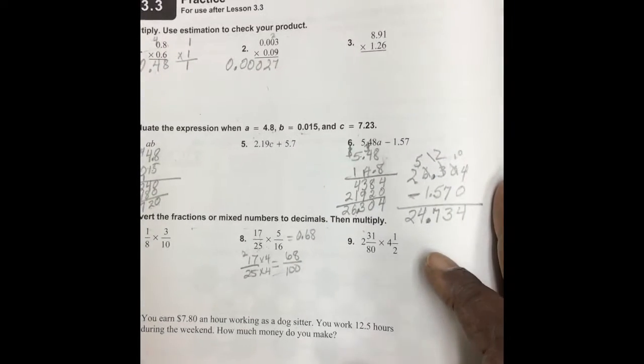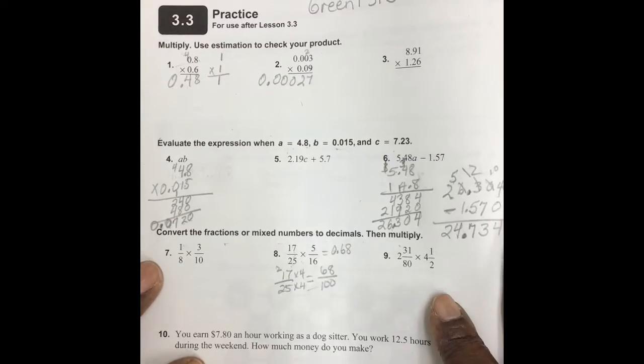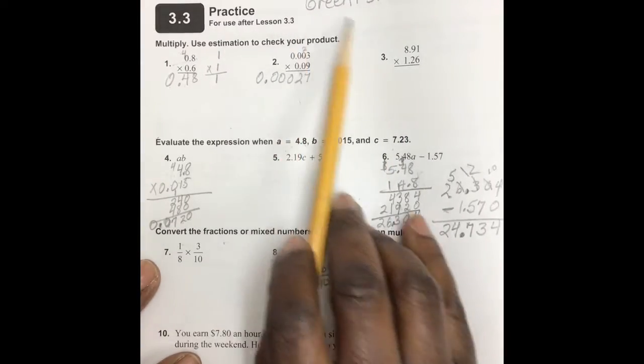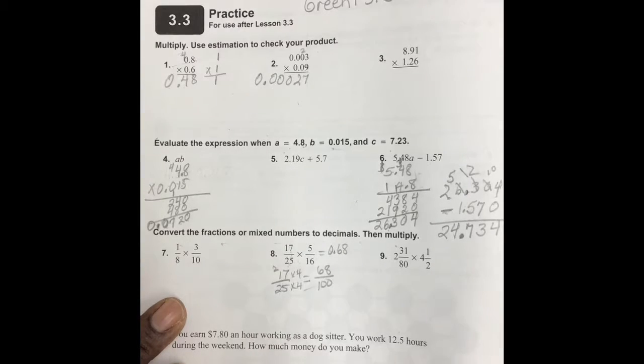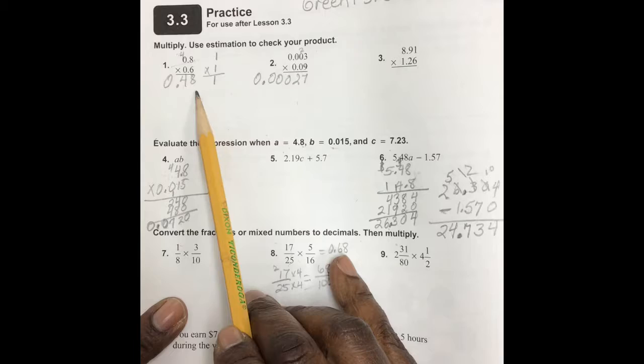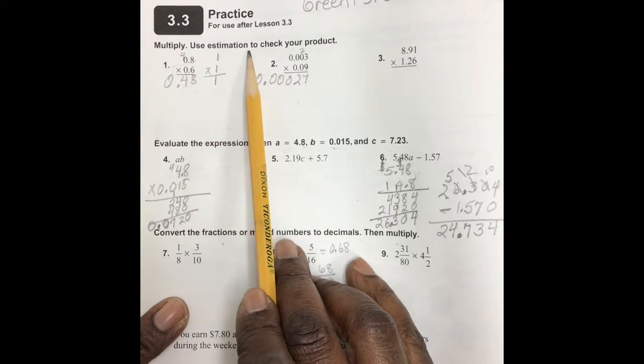Okay, I made a discovery and that is I forgot to press record, so I'm just going to go back over what I covered and then we will pick up from there. I did the first one, the estimation, to show you that first I did the actual six times eight is 48, and that there are two numbers that follow the decimal point.